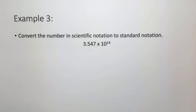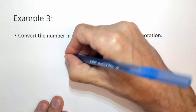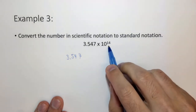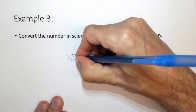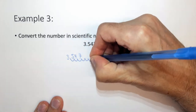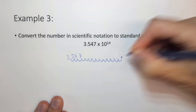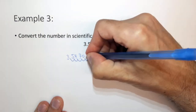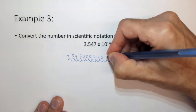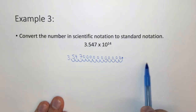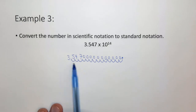Now let's go the opposite direction. If we're given a number in scientific notation and want to write it out as a real number, in this case we have 3.547 and we want to move the decimal place 14 times. We fill in zeros where there are no numbers. It turns out we need 11 zeros because we had three digits, so we needed to add 11 zeros — that's a slightly faster way of doing it.